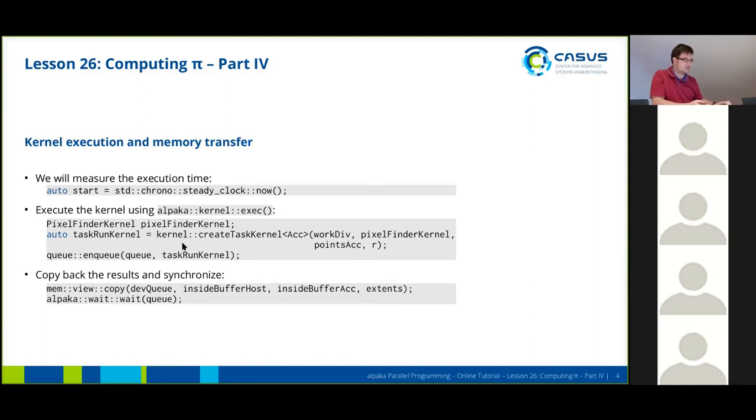This is done with the createTaskKernel function from the Alpaca API. We pass in our work division, so our grid basically. We pass in the variable here, the pixel finder kernel, our accelerator buffers, and the radius.